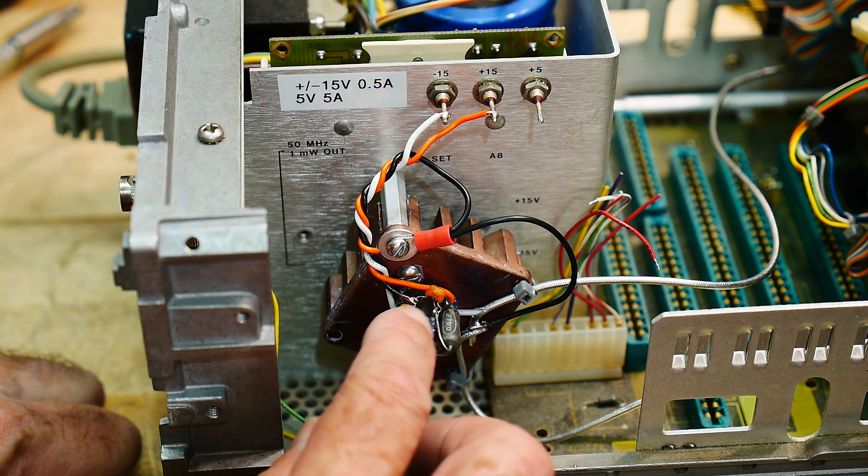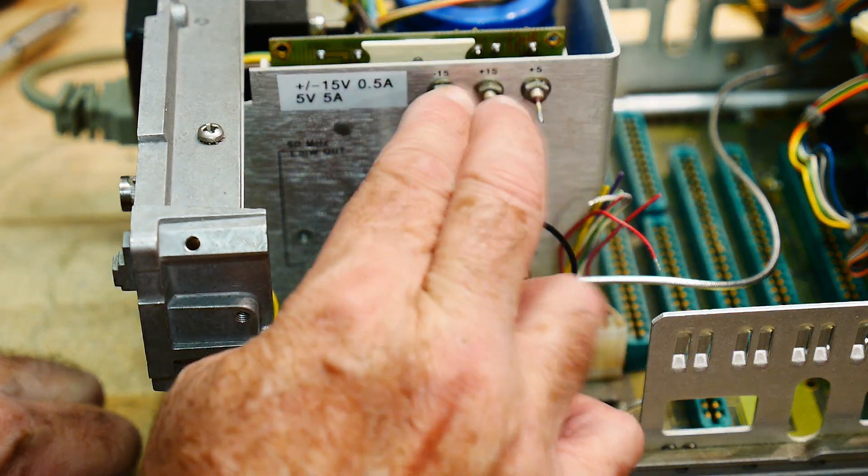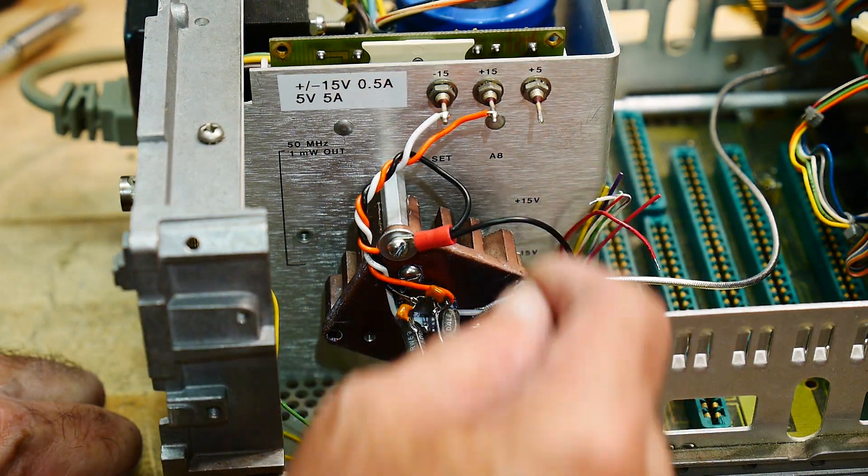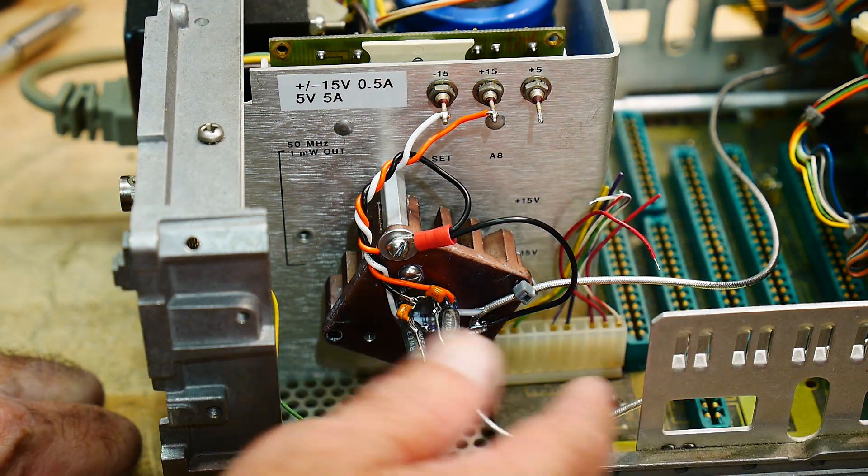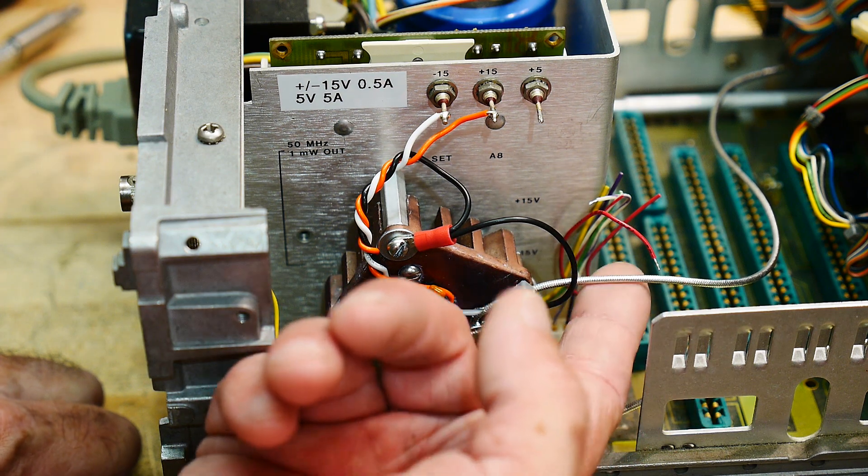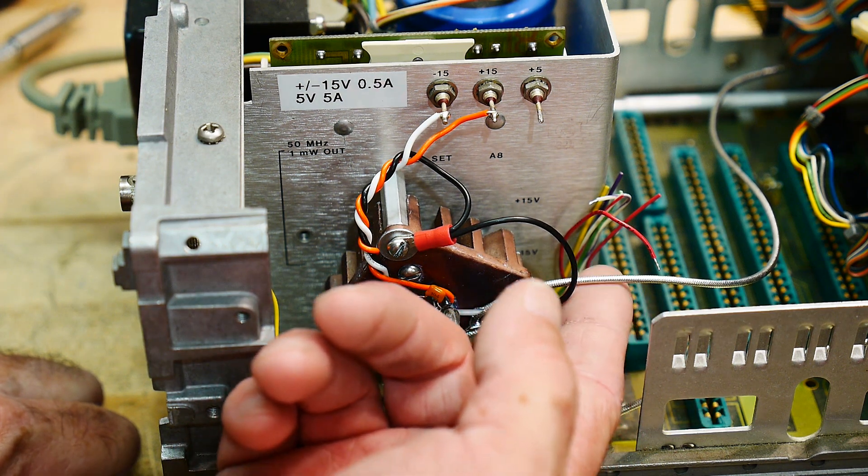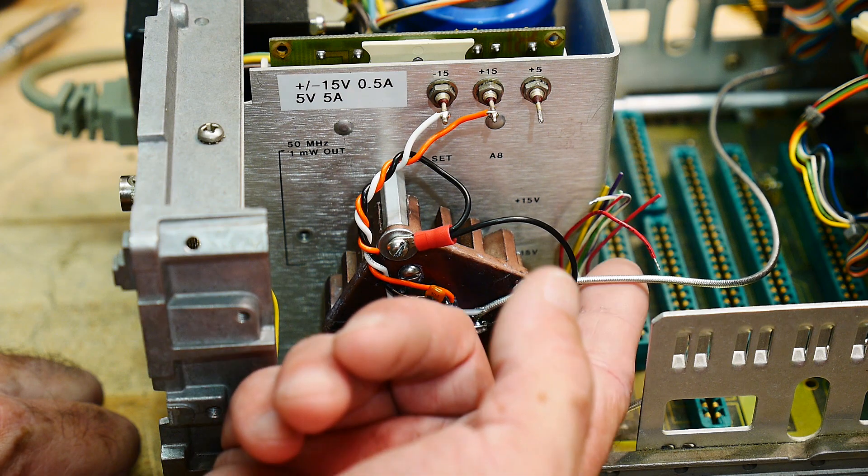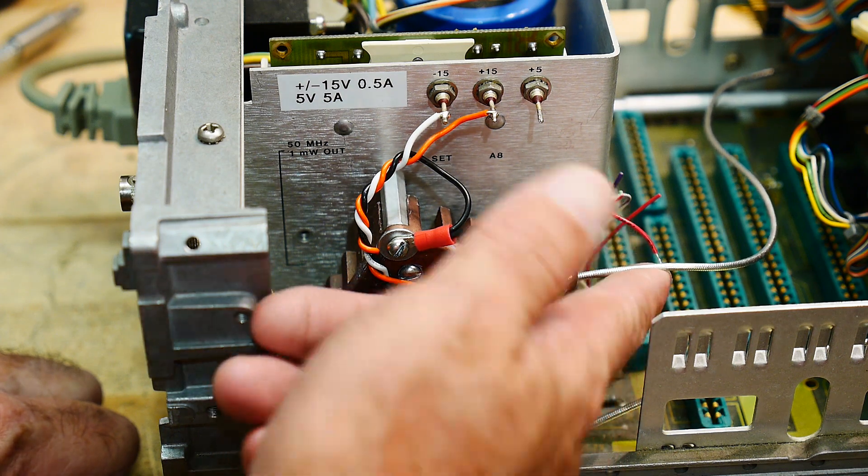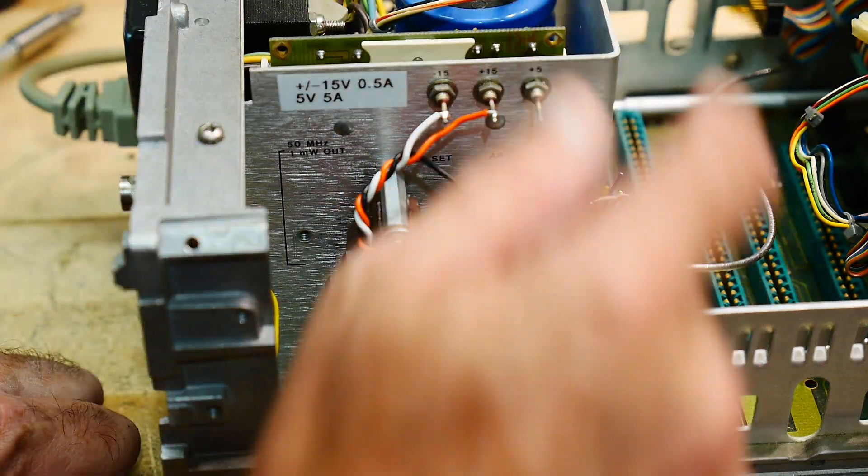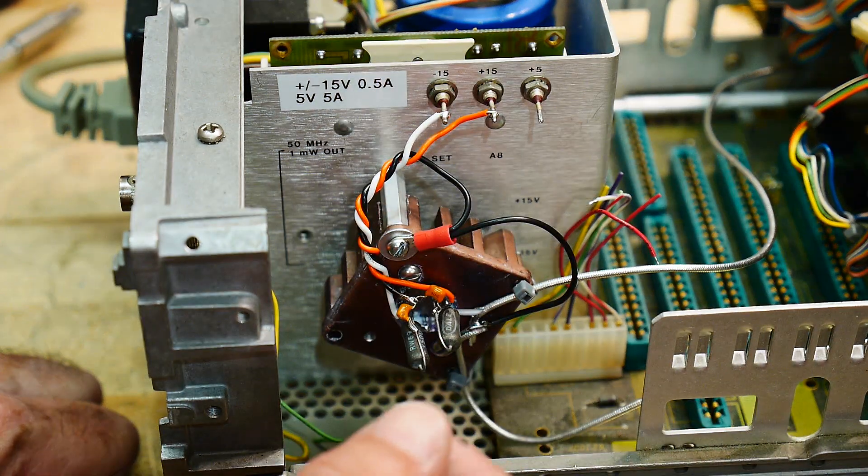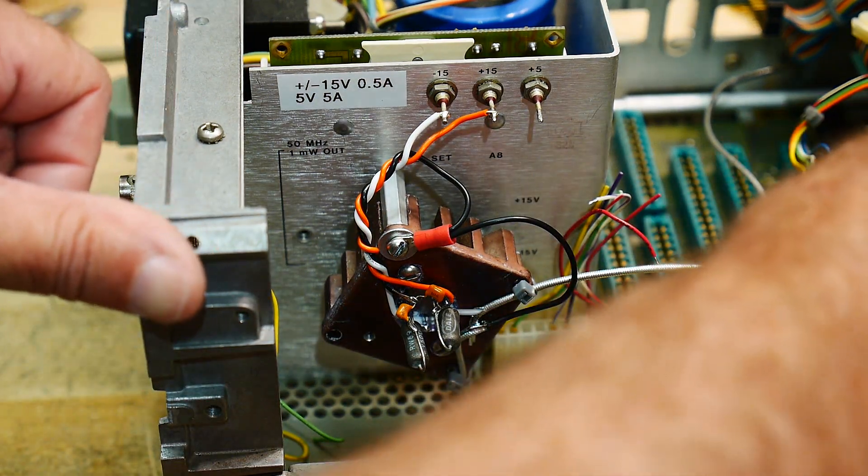And then I have a coax left over for my delay line project or my 50 ohm load project - had all that coax left over so I used that here. And it goes out to the BNC, so it seems to be functional.